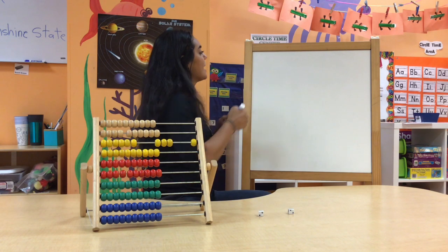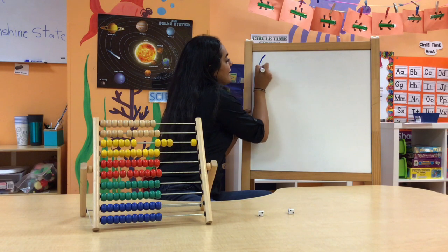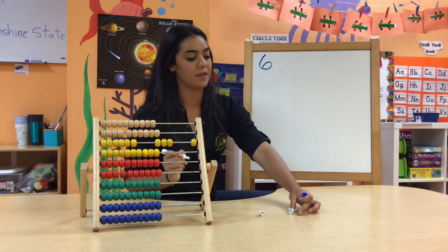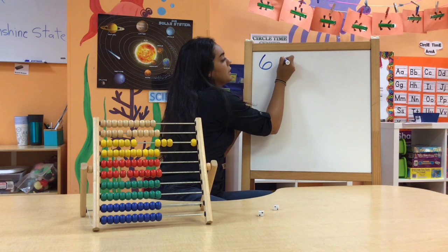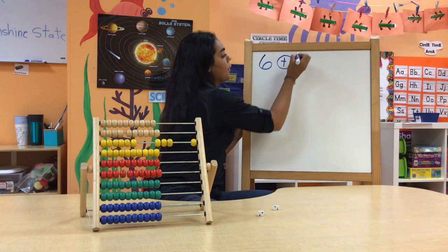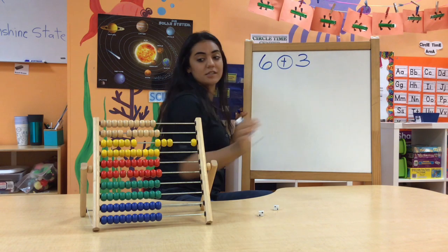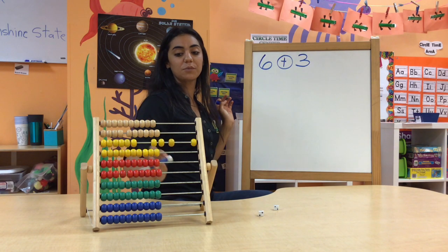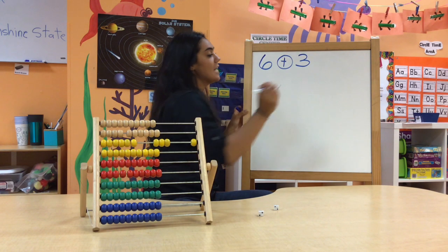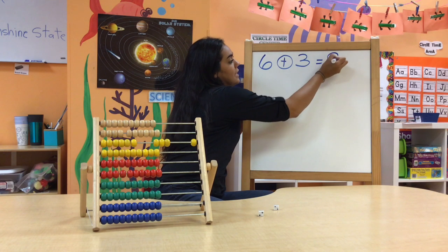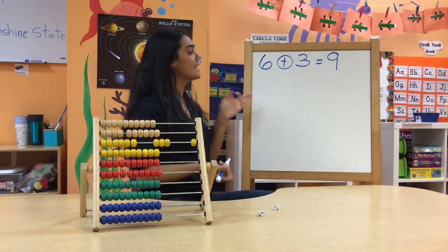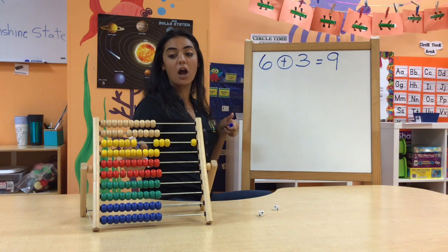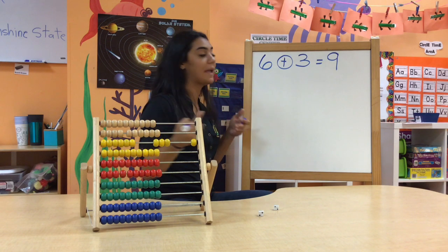Let's go ahead and write that out on the board. My first add-in is six, like the number that I rolled on my die, plus — because we are using our addition sign — three more counters, which are these three right here at the very end, is going to equal nine all together. You can check your work by drawing out these counters on your paper.